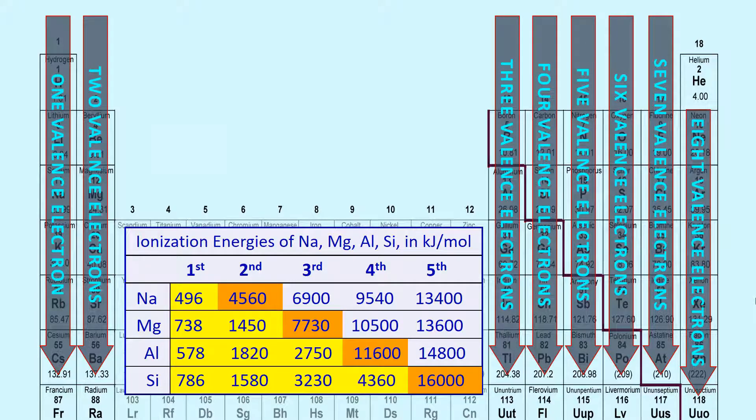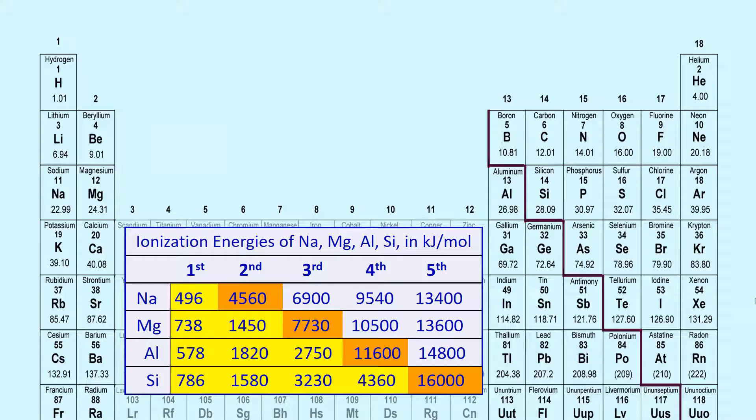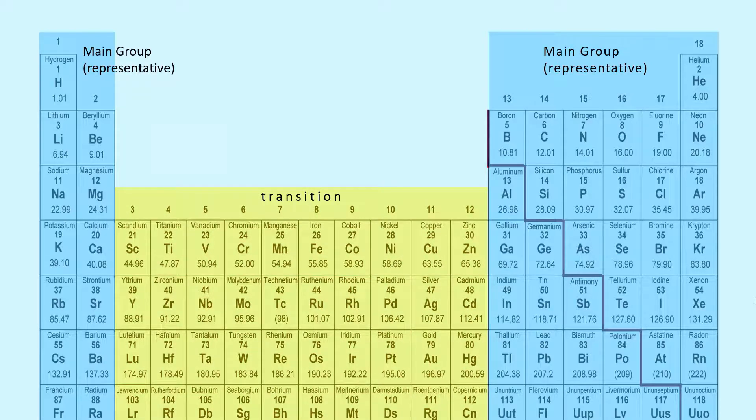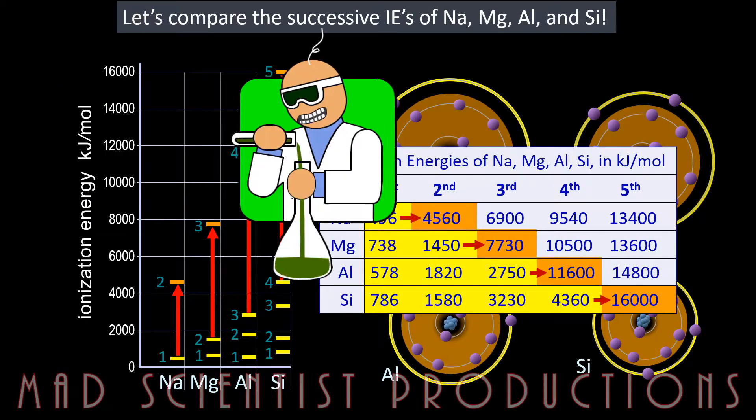You should be able to determine where the large ionization energy change will occur for any element in groups 1, 2, and 13 through 18 based on their number of valence electrons. Note that we have only dealt with ionization energies of main group or representative elements. Because transition metals are filling d orbitals and can lose more than one specific amount of electrons to become stable, their successive IE patterns are more obscure. That's it for today's mad scientist production.